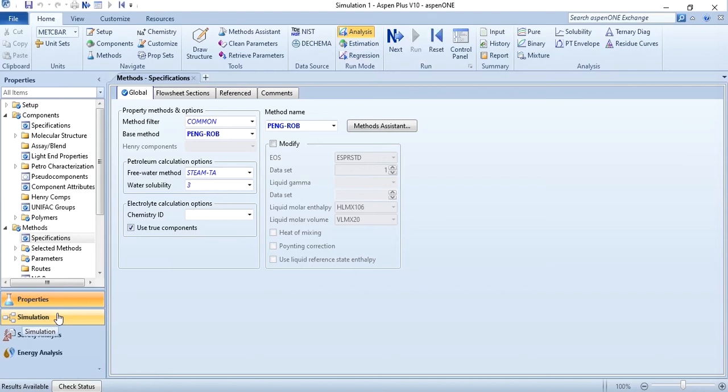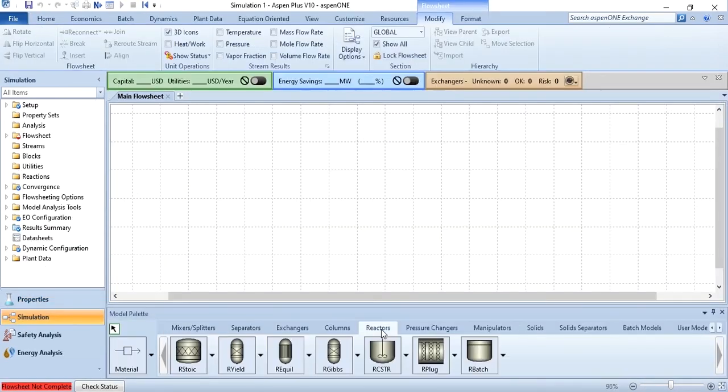Once after running, results are available. Go to the simulation environment, and in the simulation environment under the reactors tab you can see this is the stoichiometric reactor which is R-stoic, R-yield which is the yield reactor, equilibrium, Gibbs, CSTR, plug, and batch reactor. So we will start from R-stoic.